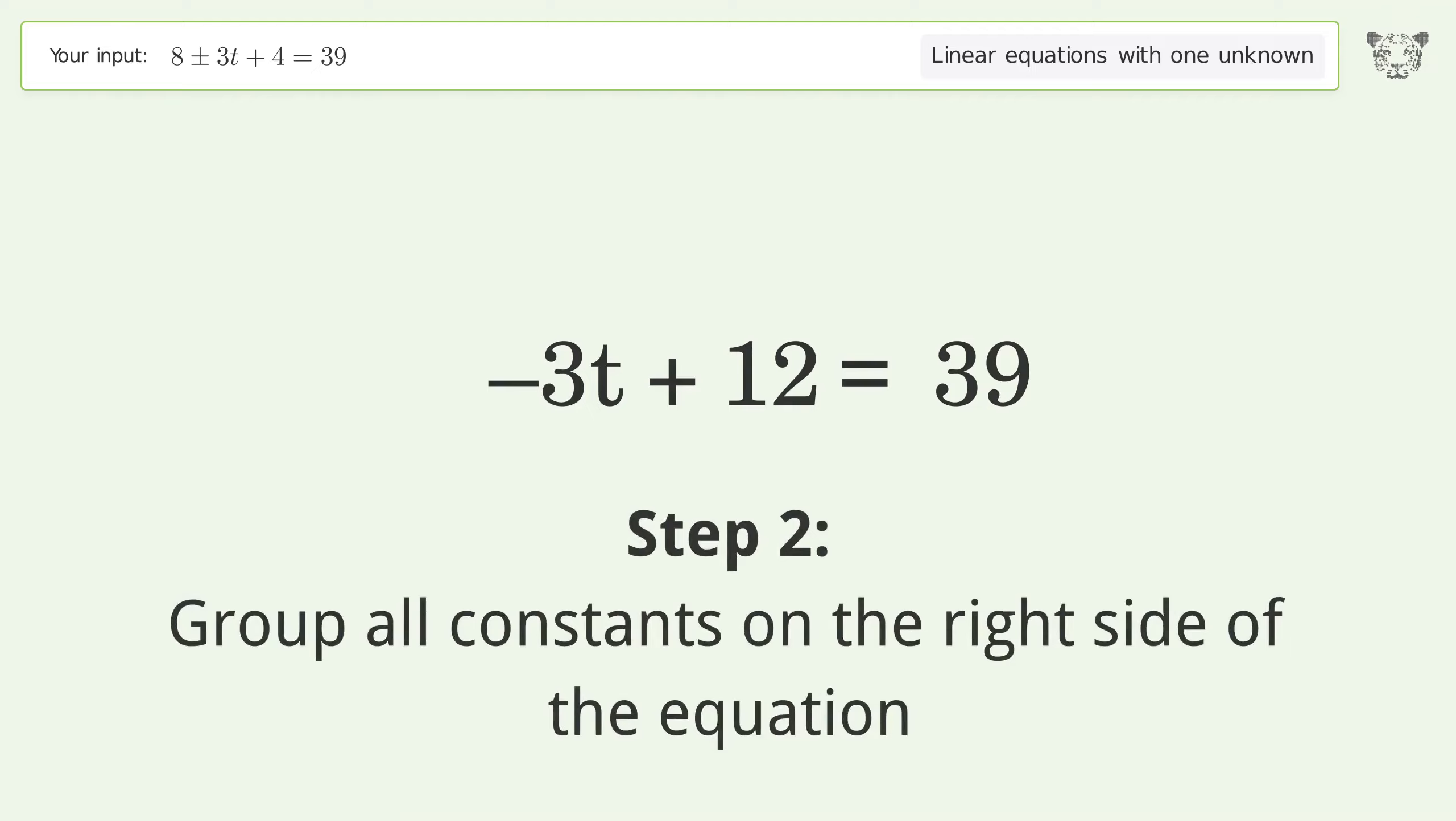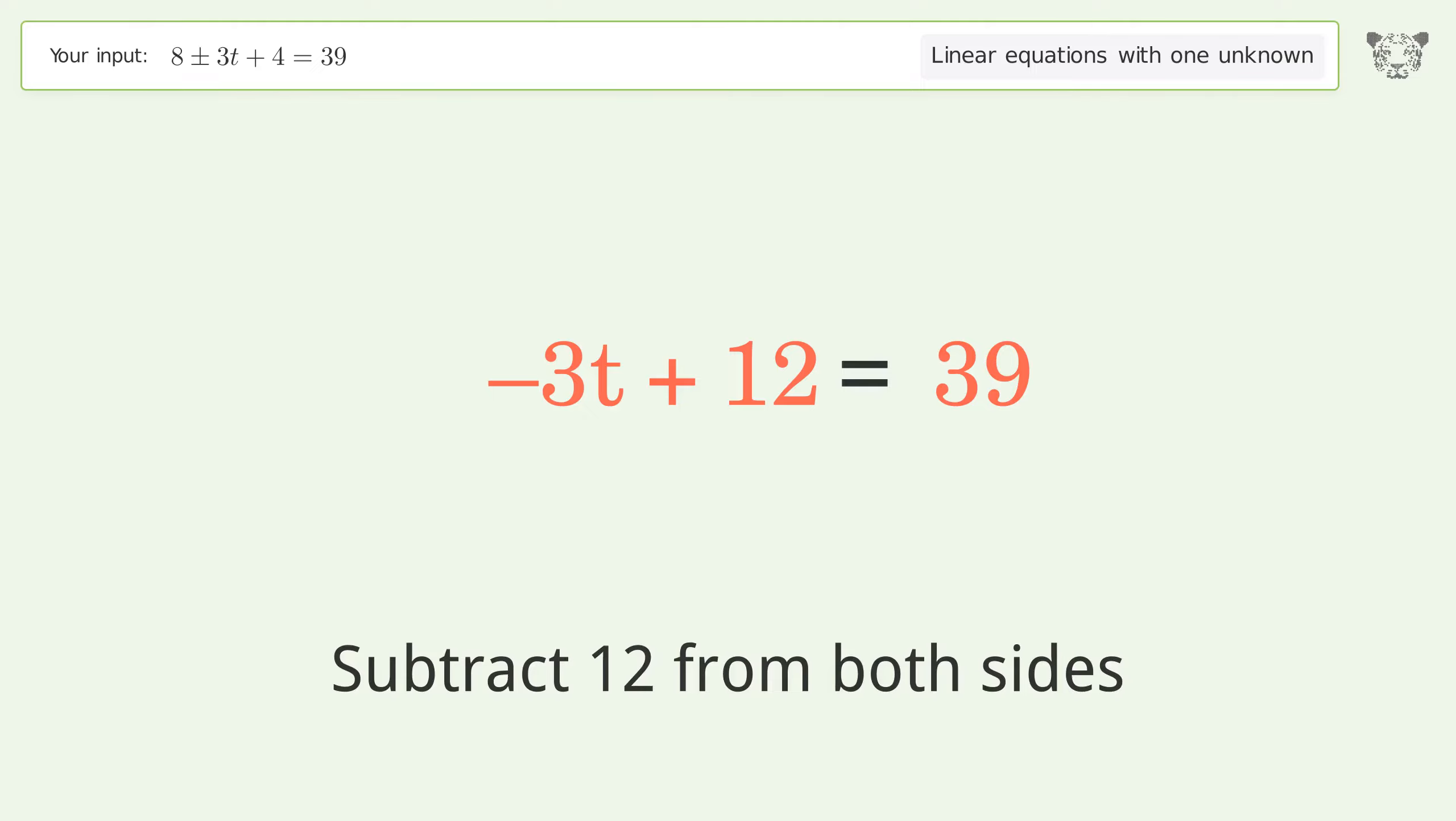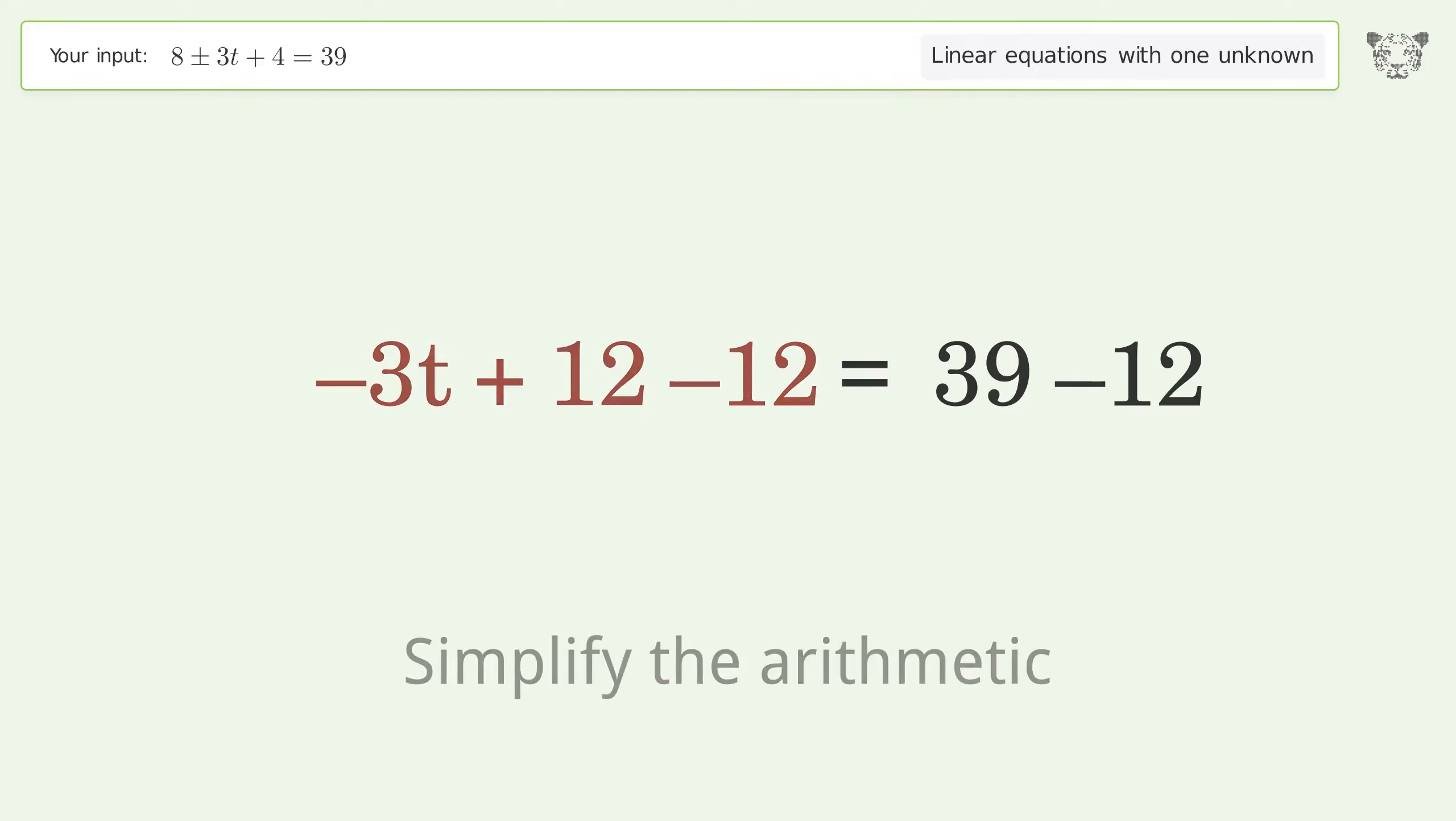Group all constants on the right side of the equation. Subtract 12 from both sides. Simplify the arithmetic.